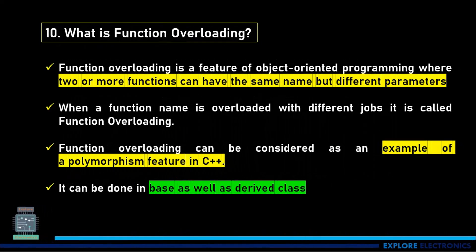What is function overloading? Function overloading is a feature of OOPs where two or more functions can have the same name but different parameters. When a function name is overloaded with different jobs, it is called function overloading. Function overloading can be considered as an example of polymorphism. It can be done in base class as well as derived class.